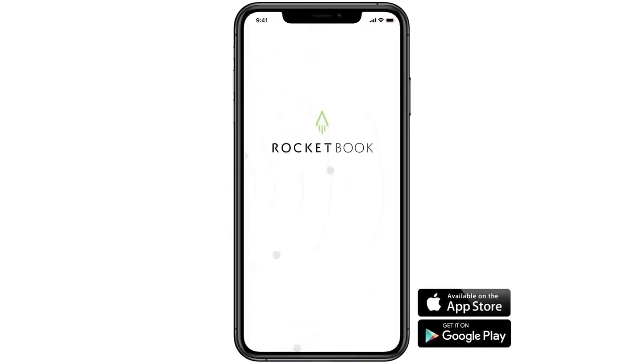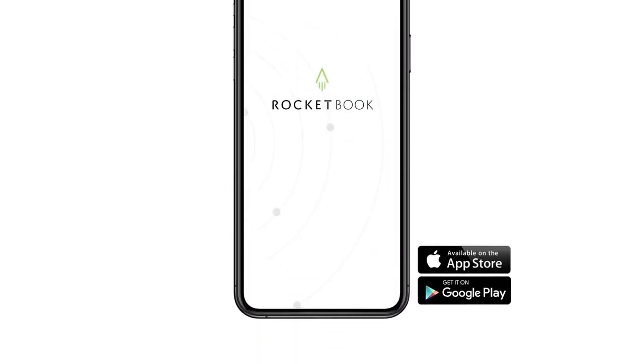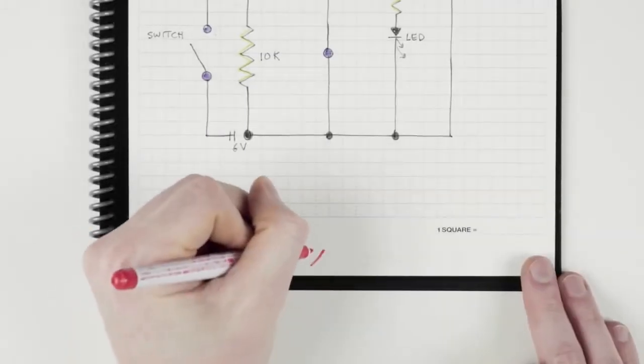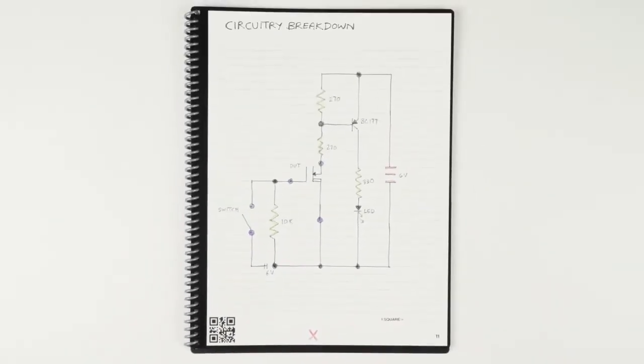The Matrix also works with the Rocketbook app. So before you erase your pages, you can bundle together your plots and dots simply by marking a symbol on the bottom of the page.